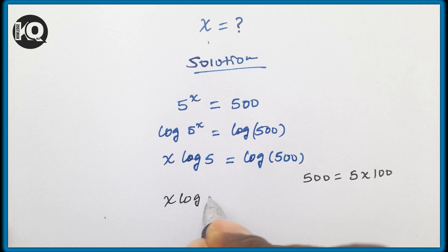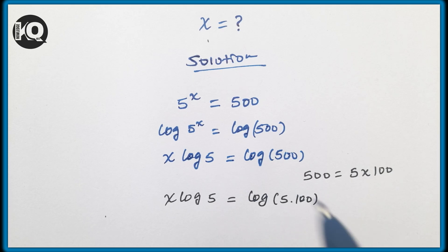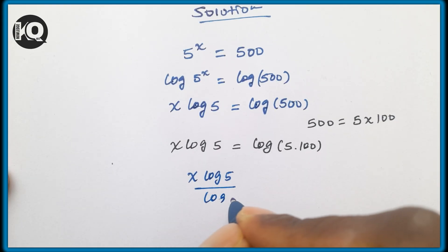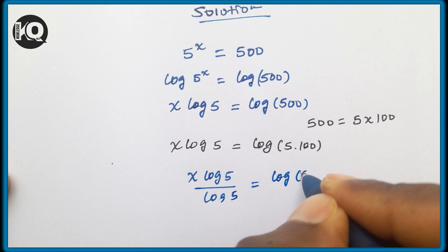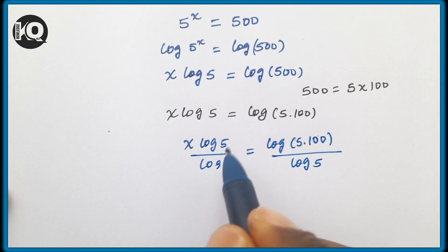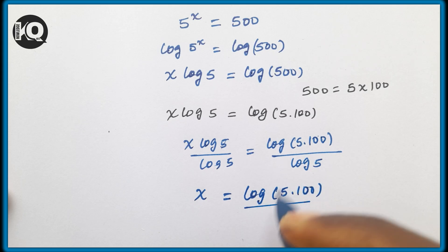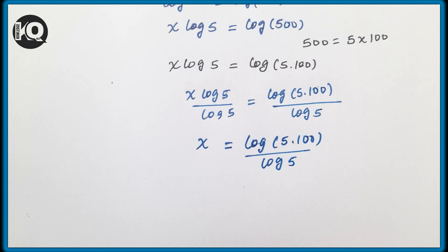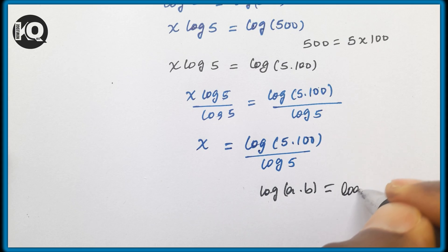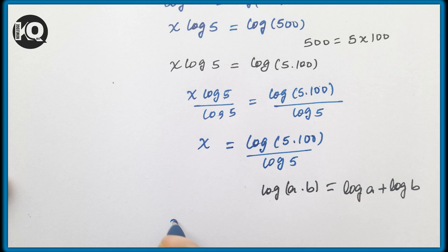Let's divide both sides by log(5): x·log(5) ÷ log(5) = log(5 × 100) ÷ log(5). The log(5) on the left cancels. From the rule of logarithms, log(a × b) = log(a) + log(b), so we apply this rule to expand log(5 × 100).